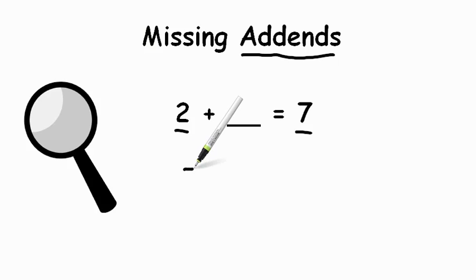So if we take that seven and subtract the two, we will find the missing number. Seven minus two is five.